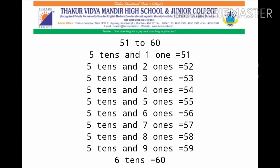5 tens and 4 ones is equal to 54. 5 tens and 5 ones is equal to 55. 5 tens and 6 ones is equal to 56. 5 tens and 7 ones is equal to 57. 5 tens and 8 ones is equal to 58. 5 tens and 9 ones is equal to 59. 6 tens is equal to 60.